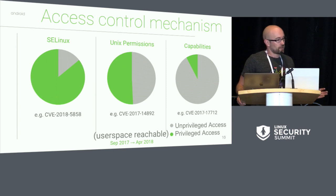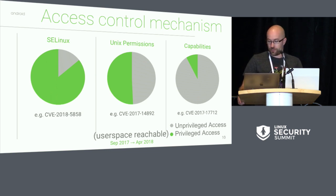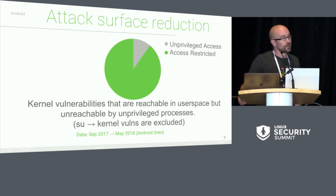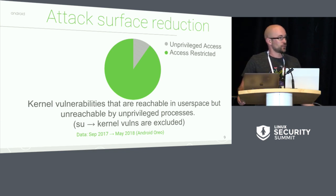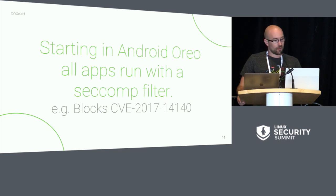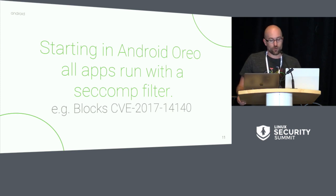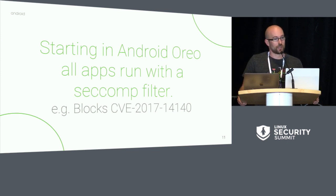A note on some of this data: it is somewhat conservative. In the previous slide where about 90% are mitigated, if we couldn't actually determine reachability — which sometimes we can't because we get bug reports with no proof-of-concepts — we sometimes just have to be conservative and say we think this is reachable from a third-party app. Also, starting with Android Oreo, which is the data we're using here, we also had a seccomp process applied to all apps, which blocked access to a few more bugs.